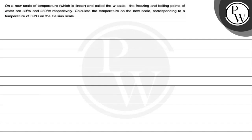Hello, let's read the question. The first question says that on a new scale of temperature which is linear and called W, the freezing and boiling points of water are 39 W and 239 W respectively.